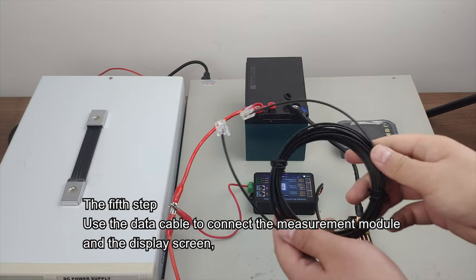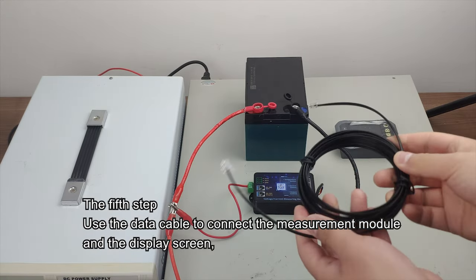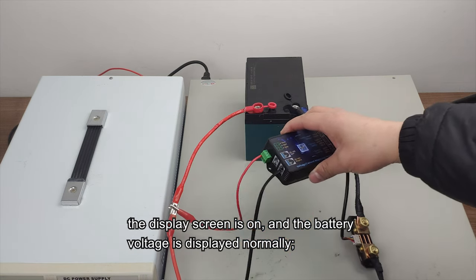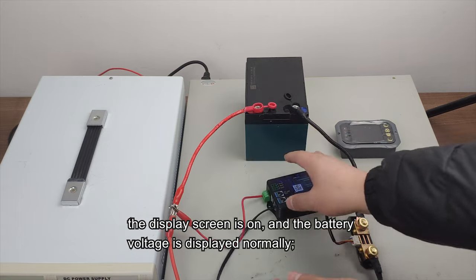The fifth step: Use the data cable to connect the measurement module to the display screen. The display screen is on and the battery voltage is displayed normally.